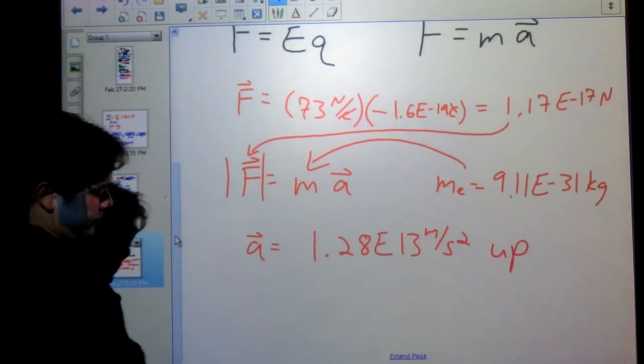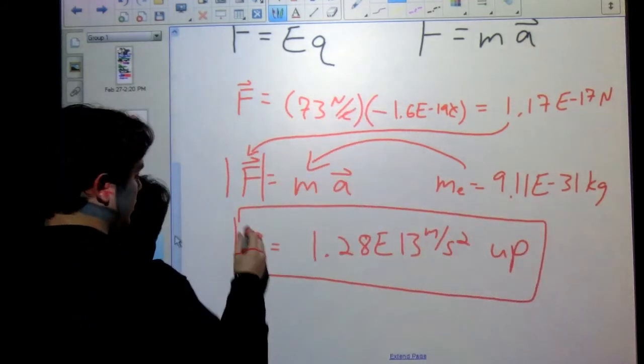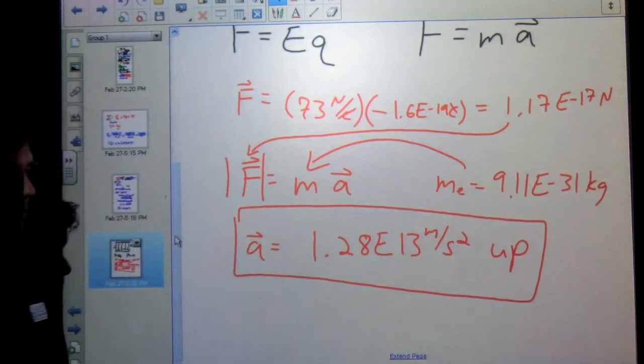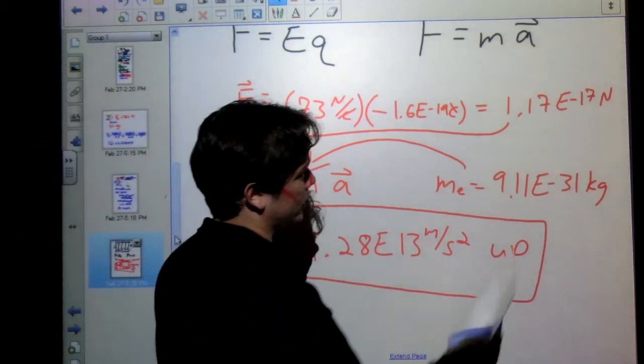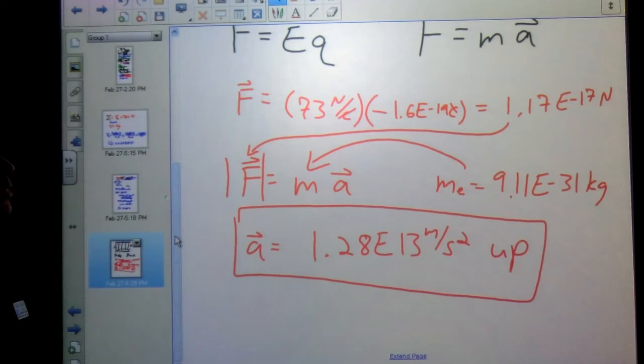We end up with an exceedingly large acceleration, partly because the mass of an electron is incredibly tiny and we've got a decent force. Well, actually not really - it's an incredibly tiny force, but again, the tininess of the electron is winning out. So it turns out charged particles are usually subjected to really exceedingly high accelerations, I should say, not necessarily forces.